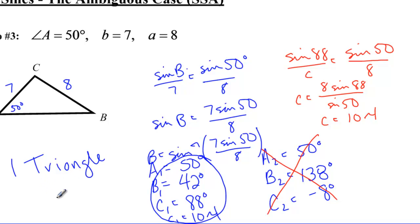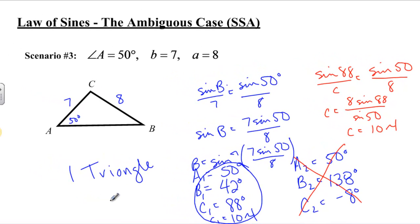So that's how it works. Basically, whenever you're using the sine inverse, we have to also check the supplement. When we check the supplement, we add it to the given angle. If it's less than 180, then we have two triangles. If it's more than 180, we only have one triangle. And if when we do the sine inverse, we get an error, then that means there's no triangles. And that's the ambiguous case for the law of sines.